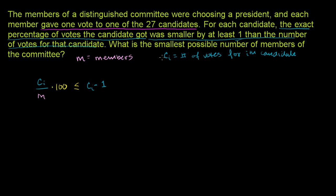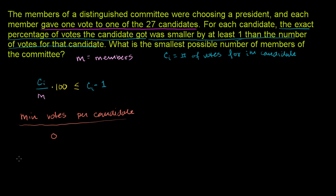Now, what is the smallest possible number of members? We want to minimize the number of members, so we want to minimize the number of votes each candidate gets. Can we have zero votes per candidate? Well, they tell us each member gave one vote to one of the 27 candidates, so everyone got at least one vote — so no, we cannot have zero votes.